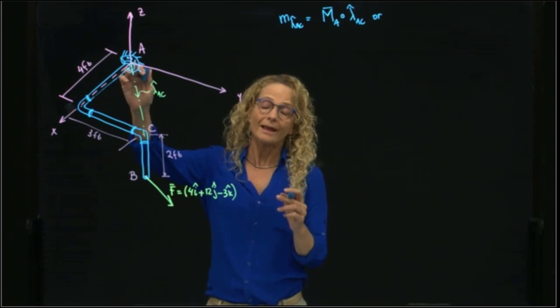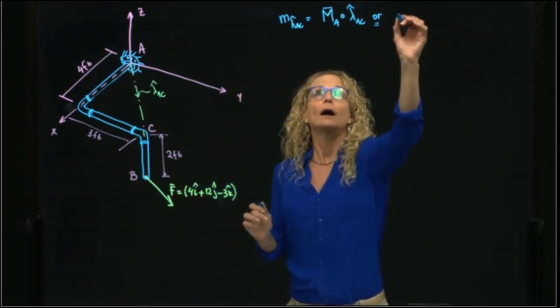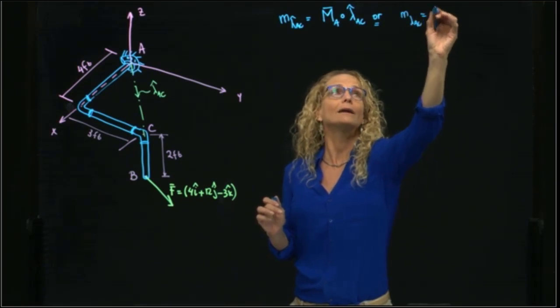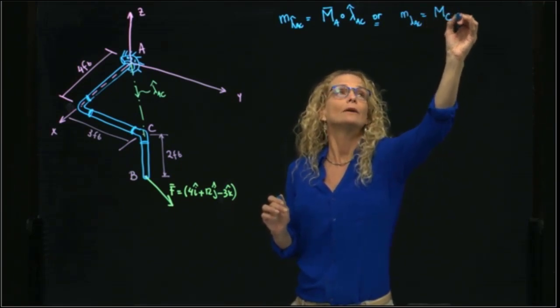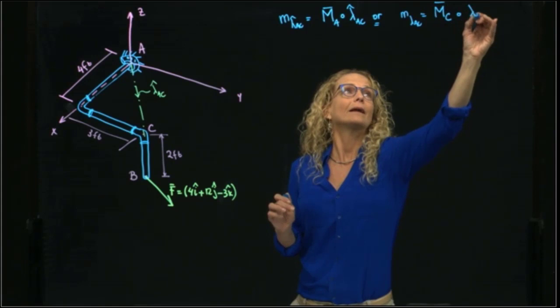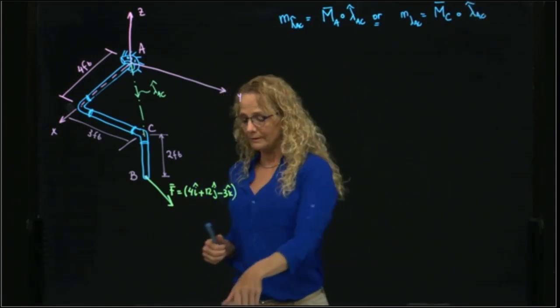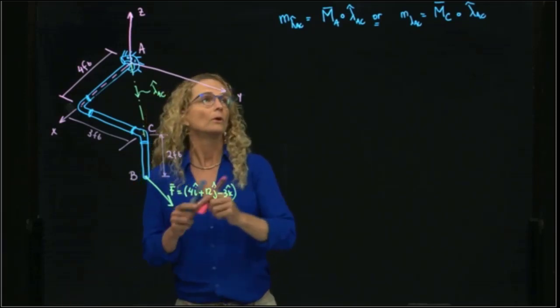I can use either A, or I can say that the moment of that axis, which is a scalar, is the moment at C dot that vector. So I can use either approach because I can use any point of my axis.